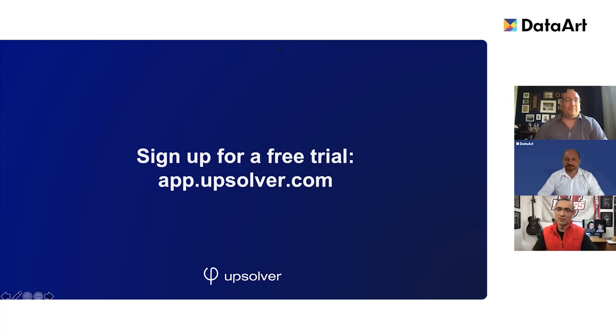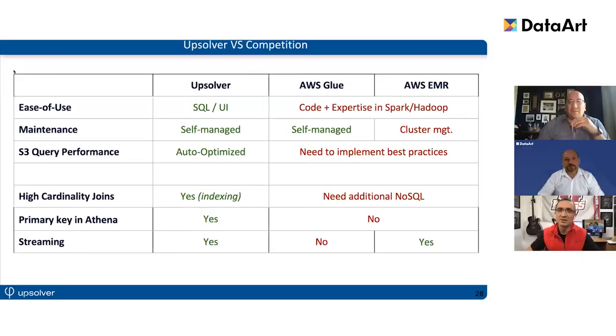Thank you, Todd. That was fascinating — there are a couple of very powerful customer examples there. I see some questions coming in. Todd, I think you're the best person to answer this: can you unpack a little bit of what Upsolver is doing to make the lake faster? All those 50x or 95% less effort figures sound almost too good to be true. I'm suspecting there's some clever engineering going on behind the scenes to decrease exposure to, for instance, AWS infrastructure costs — maybe you could shed some light on that.